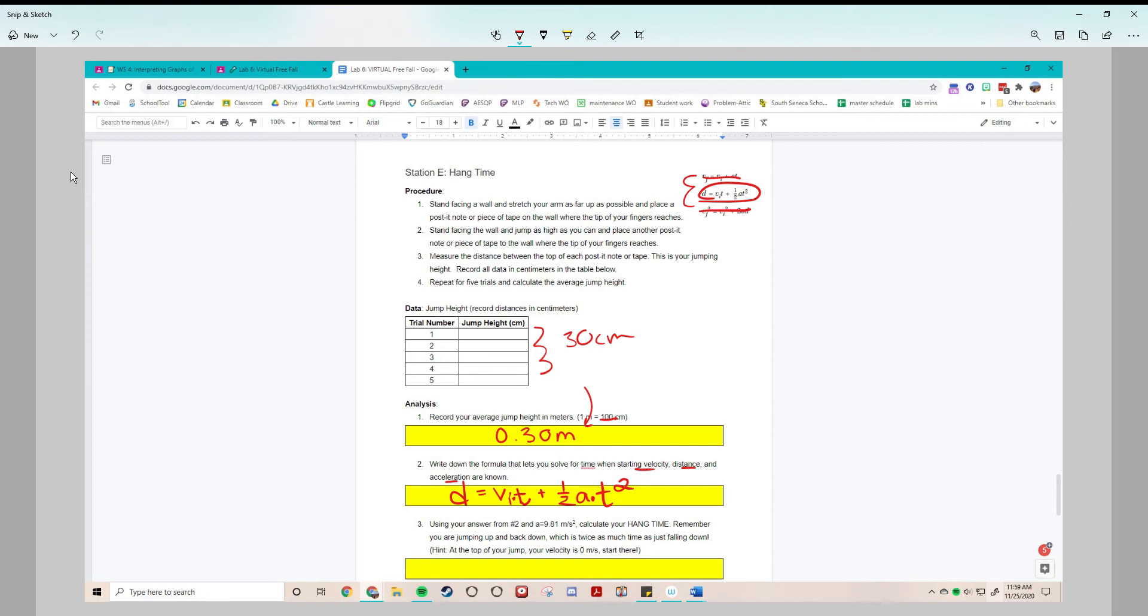Okay, so this is the part I really wanted to explain: how to use your answer from number 2 and acceleration being acceleration due to gravity. Maybe we put a negative sign in there to calculate hang time. So we jump up and back down.